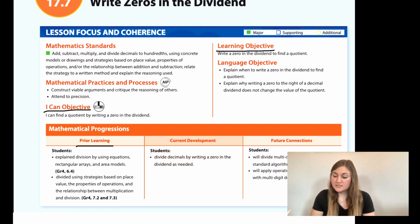The learning objective is to write a zero in the dividend to find a quotient. The prior learning is that students explained division by using equations, rectangular arrays, and area models, and students divided using strategies based on place value, the properties of operations, and the relationship between multiplication and division.